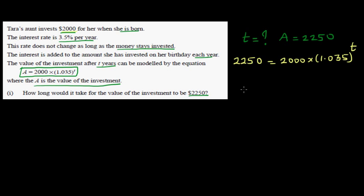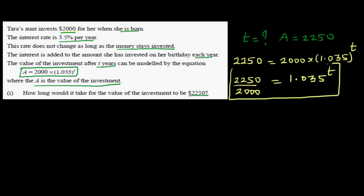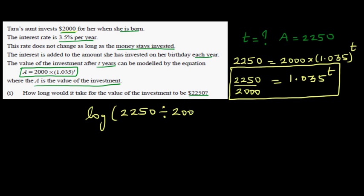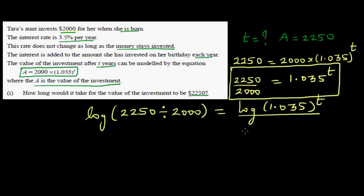Setting A equal to 2250: 2250 equals 2000 times 1.035 raised to t. Dividing both sides by 2000 gives 2250 divided by 2000 equals 1.035 raised to t. Taking the log of both sides: log of (2250 divided by 2000) equals log of 1.035 raised to t.